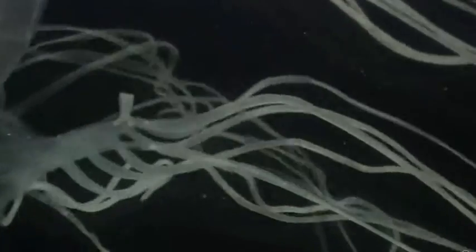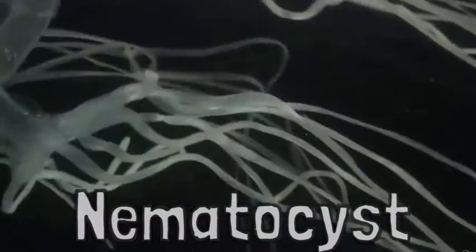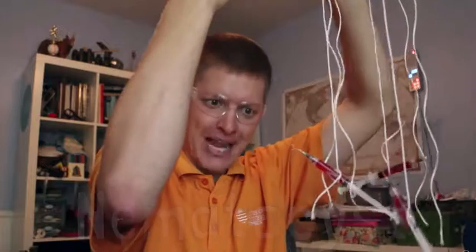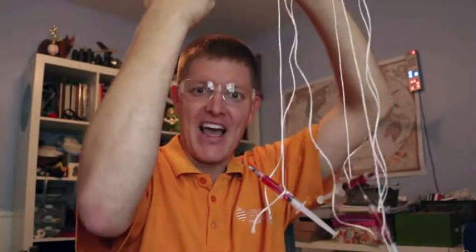Jellyfish tentacles have organelles in them called nematocysts. They're like little hypodermic needles. And when you're swimming and those hypodermic needles brush up against your body, they stab into you and inject venom.